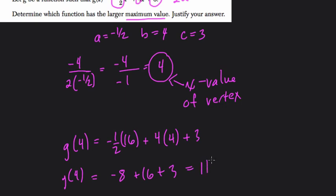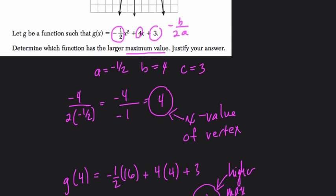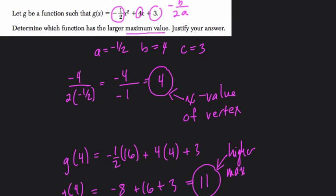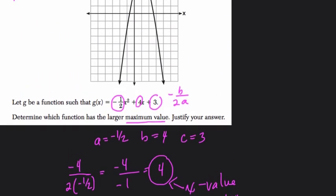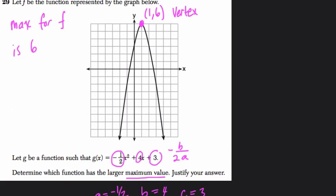It's a higher max, right there. And that's, I think, pretty sufficient for justifying. You could say, based on the input of 4, we know that it has a higher output. So the higher maximum. All right, hope this helps.